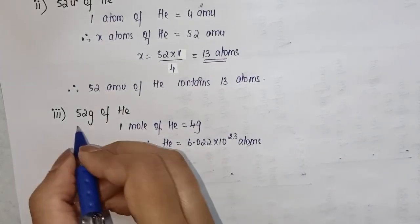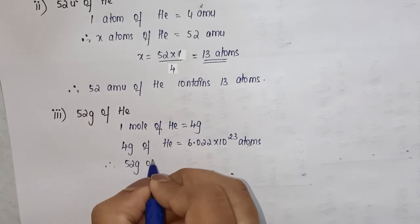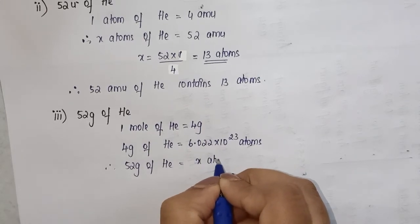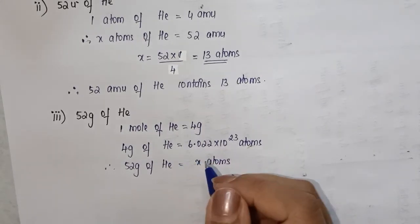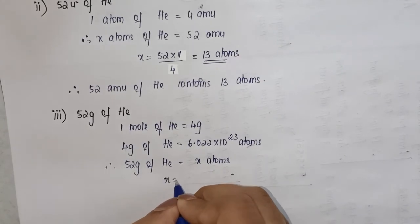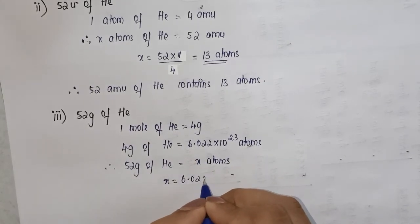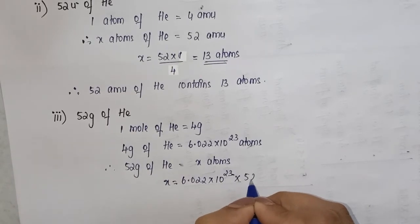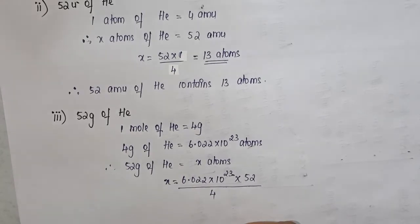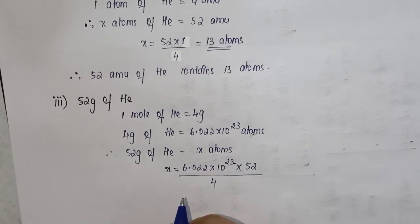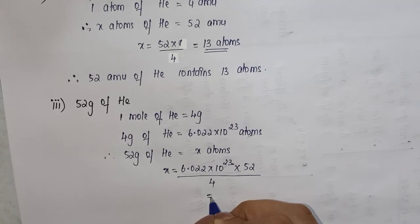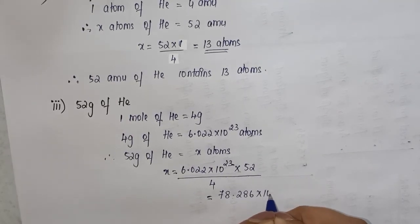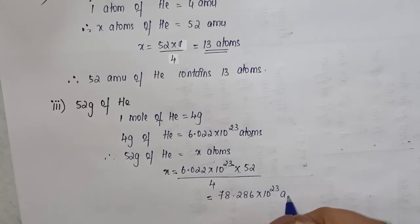Therefore, 52 grams of helium is equal to x atoms. Cross multiplying: x = 6.022 × 10²³ × 52 divided by 4. When we solve this, we get 78.286 × 10²³ atoms.